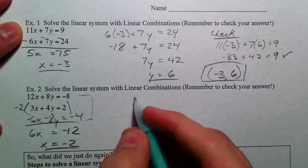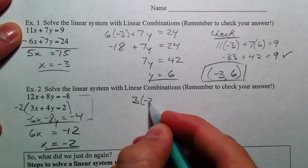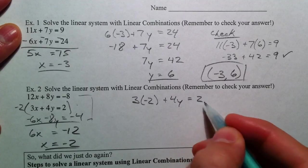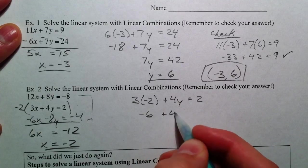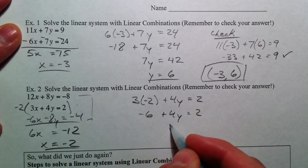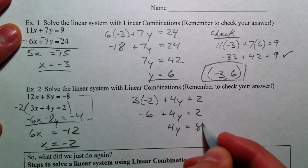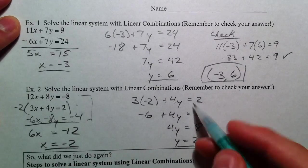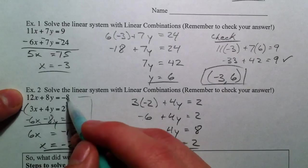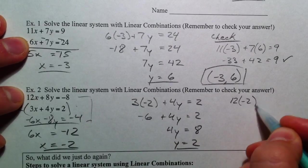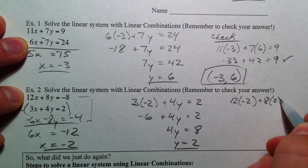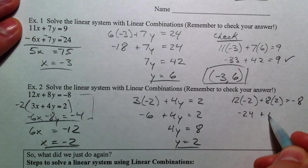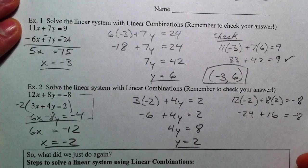Plug it back in. I'm going to plug it back into the second one just because it has smaller numbers. Find our second variable. So, negative 6 plus 4y equals 2. Add the 6 over. And you get 8. So, y equals positive 2. Check your answer. We got it from our second. So, I'm going to plug it into our first. 12 times negative 2 plus 8 times positive 2 equals negative 8. Negative 24 plus 16 is negative 8. And that checks out.